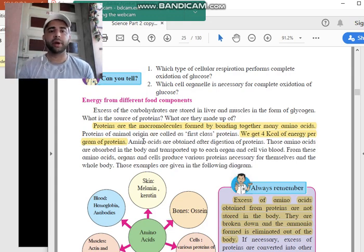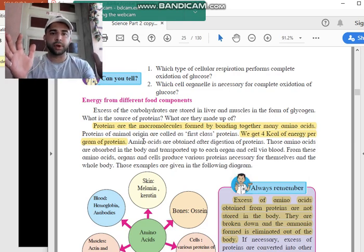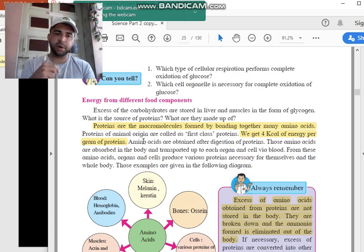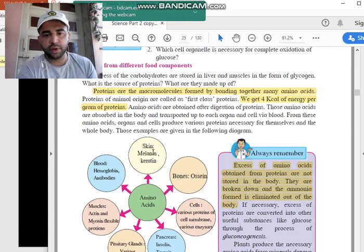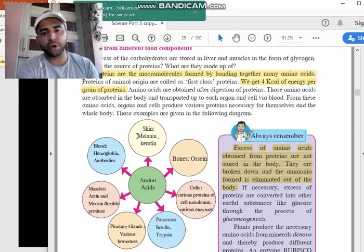So you actually intake proteins and when they get into your stomach they break into amino acids. Now these amino acids will be transported through your blood to different parts of your body. So amino acids from your stomach are going to each and every part of your body.